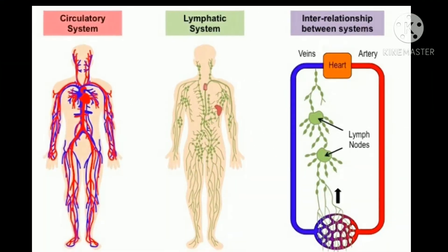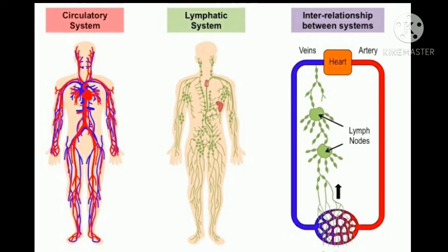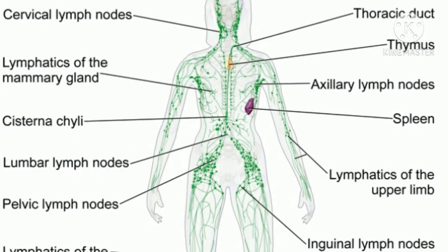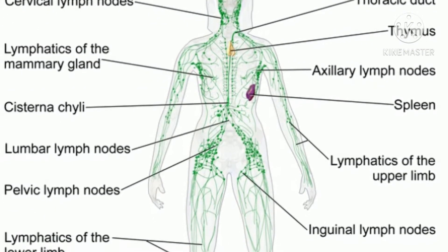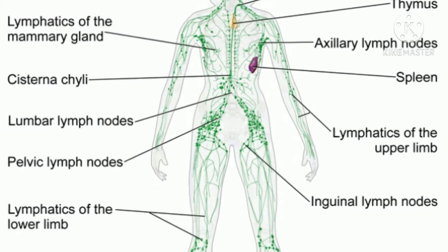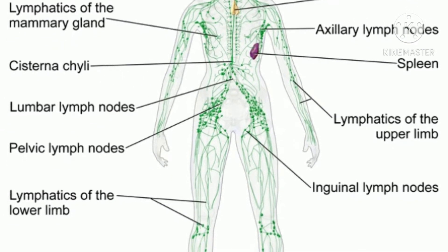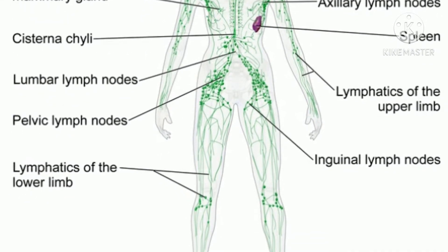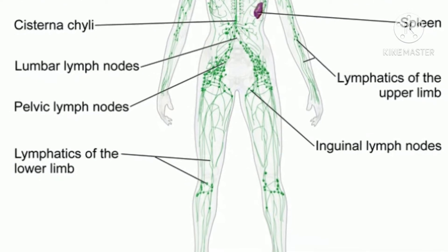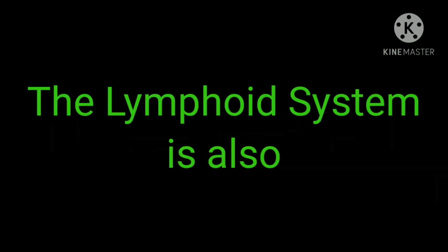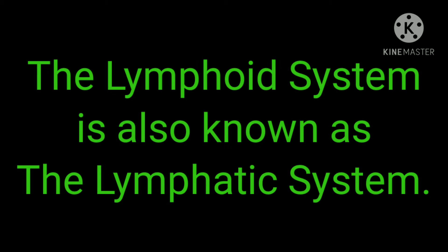The lymphoid system. The lymphoid system is part of the circulatory system and the immune system. It is a system of capillaries, vessels, nodes and lymphoid organs. The lymphoid system transports a fluid called lymph from the tissue to the bloodstream. The lymphatic tissues of these organs filter and clean the lymph of any debris, abnormal cells or pathogens. The lymphoid system is also known as the lymphatic system.